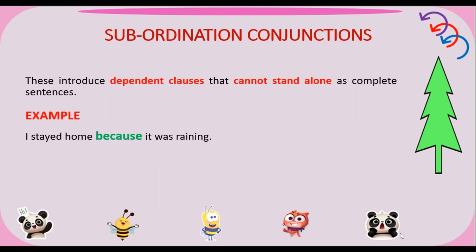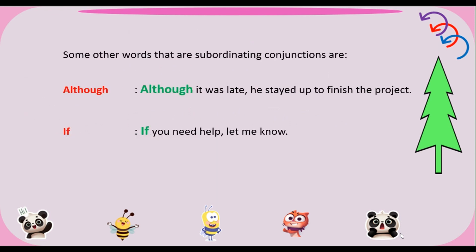Next is Subordinating conjunctions. These introduce dependent clauses that cannot stand alone as complete sentences. Example: I stayed home because it was raining. Some other subordinating conjunctions: Although — although it was late, he stayed up to finish the project. If — if you need help, let me know.